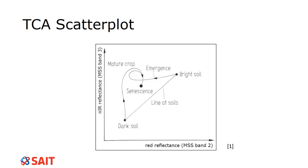So why is it called a tasseled cap analysis? If we look at the MSS scatter plot with TC1 on the x-axis and TC2 on the y-axis, what you're seeing is exactly what it looks like — a tasseled cap, like a Santa hat. The line is often positioned lower than shown here, but that characteristic shape is where the name comes from.